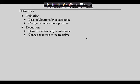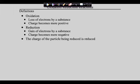Why reduction? Why do they call the gaining of electrons reduction? Because the charge is going down. When a substance is reduced, its charge goes down, so they call it reduction. The way I remember it: the charge of the particle being reduced is reduced. Or, as they apparently teach at the University of Utah: OIL RIG. Oxidation is loss, reduction is gain. Oil rig.